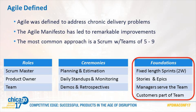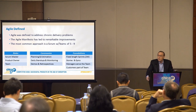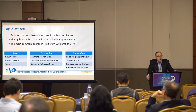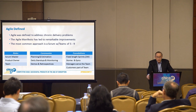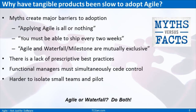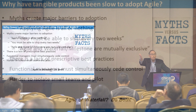This is another difficulty in implementation, because unfortunately many organizations don't have a very robust product marketing organization — not that they're not skilled, they just don't have enough headcount, and so this can be a challenge. So what are some of the challenges we see? Basically, why have tangible products been slow to adopt Agile?